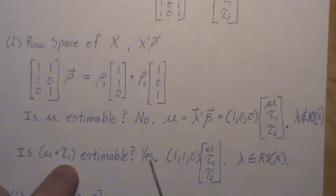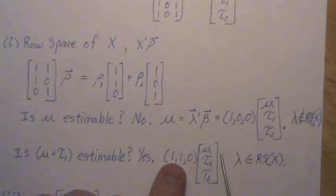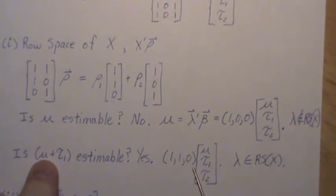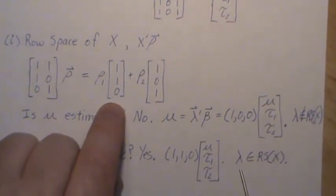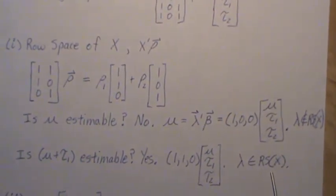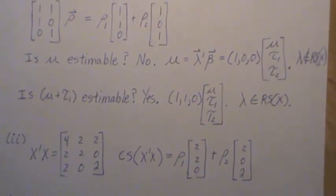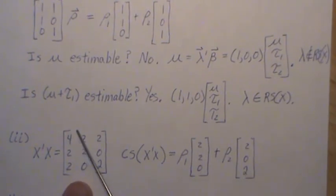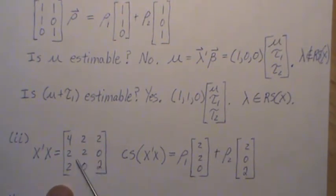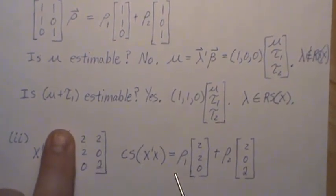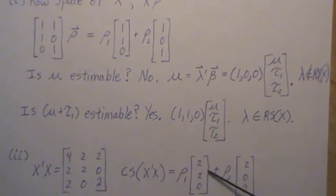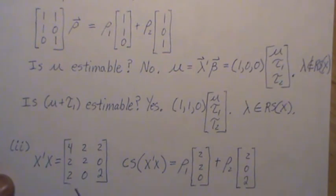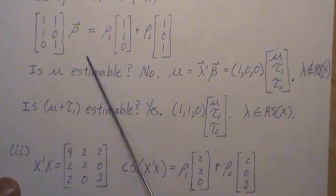Is mu plus tau 1 estimable? Yes. To create mu plus tau 1 we need lambda equal to 1, 1, 0; when we do this multiplication we get mu plus tau 1. And notice that 1, 1, 0 is in the row space of x. So mu plus tau 1 is estimable — that's according to Theorem 1. According to Theorem 2, if lambda is in the column space of x transpose x, then it's estimable. Notice the column space here is the same — column 2 and column 3 add to column 1, so the column space of x transpose x in this example is actually equal to the row space of x.